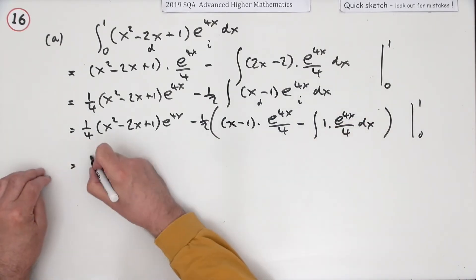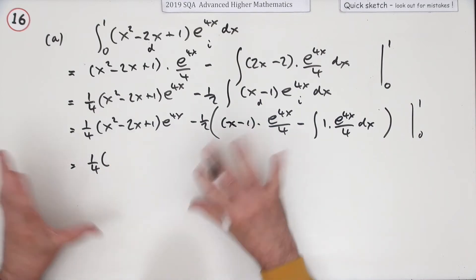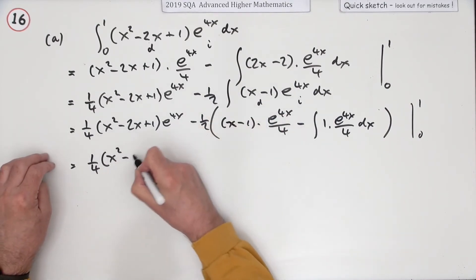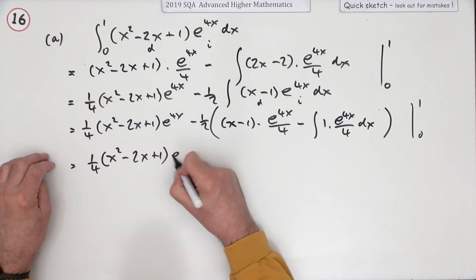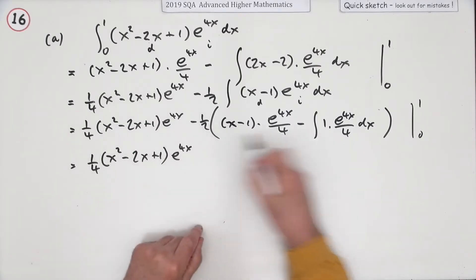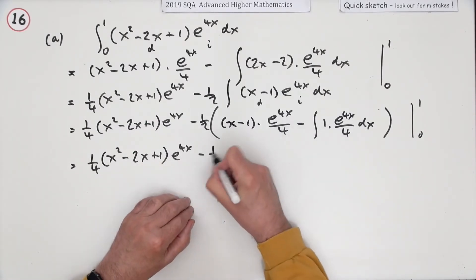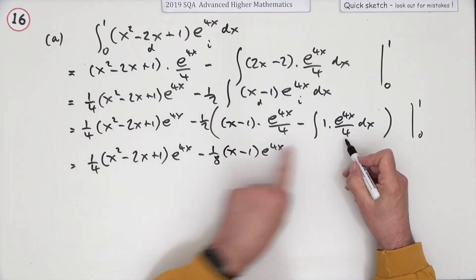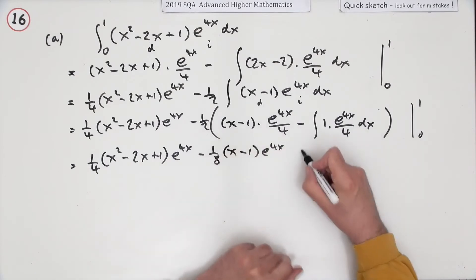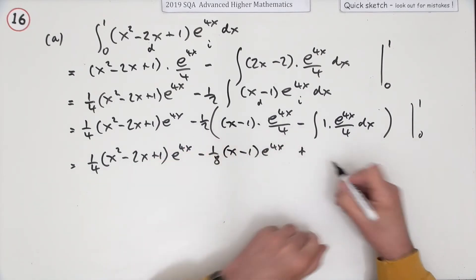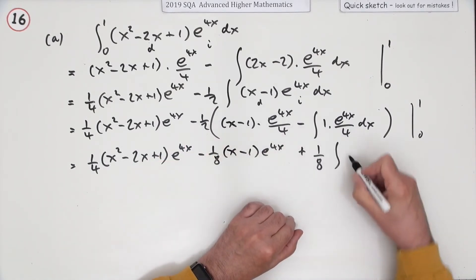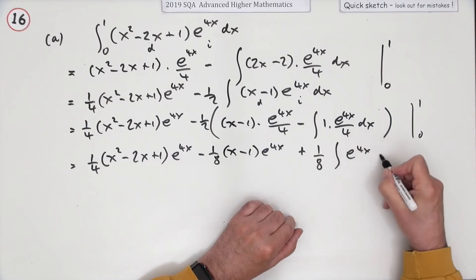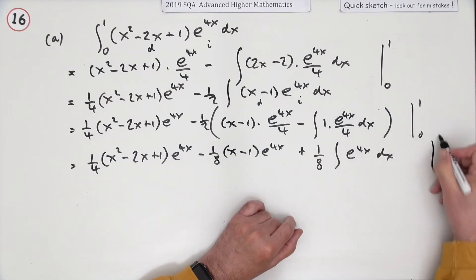Now tidy it up again, just so you can keep track of things really. e to the 4x. Now that part is going to be minus an eighth of just x minus 1 e to the 4x. Simplifying this part, I've got minus minus which is plus, and I've got an eighth of the integral of just e to the 4x dx. That's all to be evaluated.